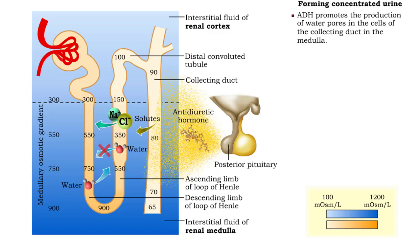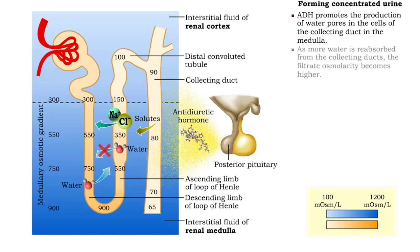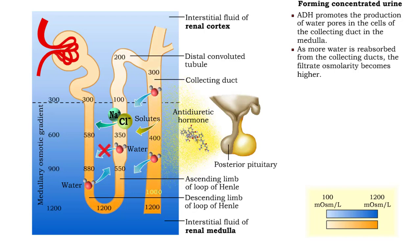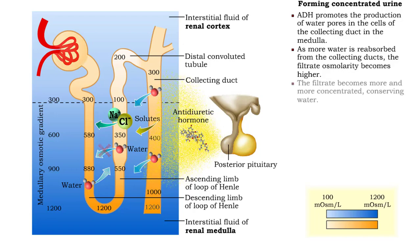Antidiuretic hormone promotes the production of water pores in the cells of the collecting duct in the medulla. As more and more water is reabsorbed from the collecting ducts, the filtrate osmolarity becomes higher and higher. In this way, the filtrate becomes more and more concentrated, conserving water.